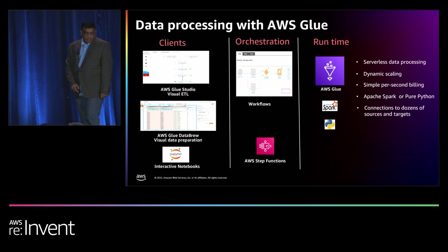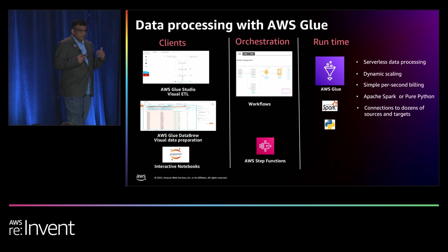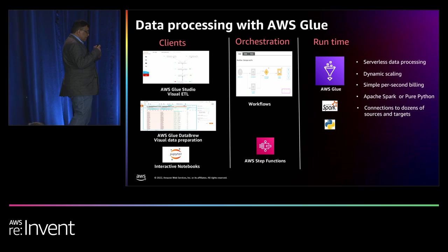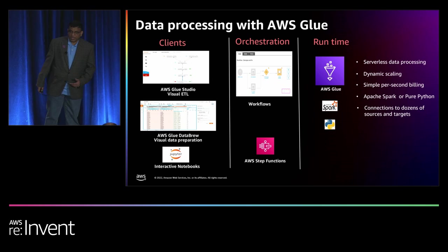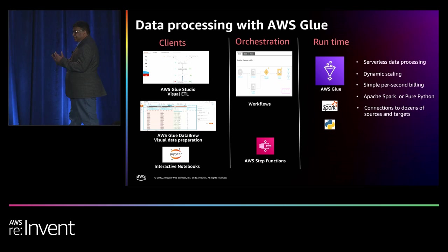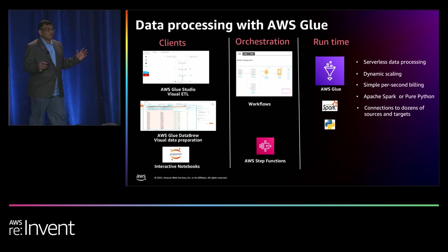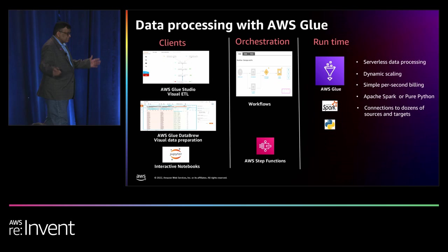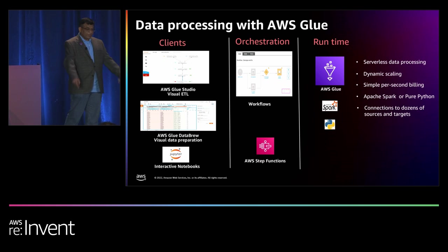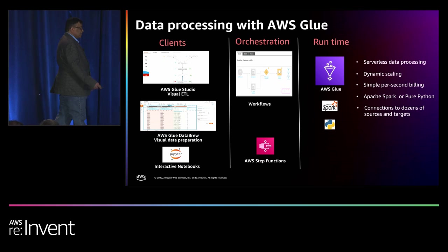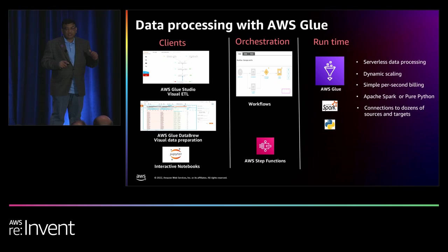Data processing with AWS Glue: AWS Glue provides a serverless data processing runtime where you can process structured and unstructured data. With AWS Glue Studio, data engineers can build data processing jobs without writing any code. Similarly, with AWS Glue DataBrew, data scientists and data engineers can build data processing pipelines by using 250 plus built-in transforms without writing a single piece of code. AWS Glue interactive sessions comes with Jupyter Notebook where data scientists and data engineers can incrementally build data processing pipelines. You can use AWS Glue built-in workflows or AWS Step Functions to build data processing pipelines with AWS Glue.